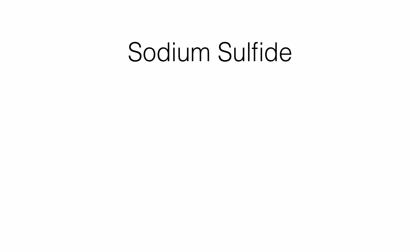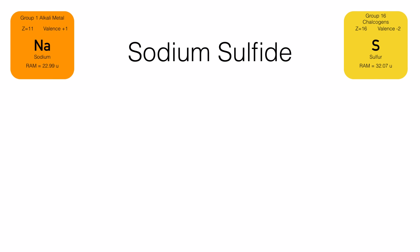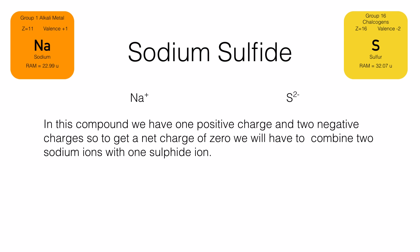Let's look at another example: sodium sulfide. The two elements are sodium and sulfur. Sodium belongs to group 1, so its valency is plus 1. Sulfur belongs to group 16, so its common valency is minus 2. To balance the charges, you need two sodium ions giving two positive charges, and one sulfide ion giving two negative charges. The formula is Na2S, and the net charge is zero.